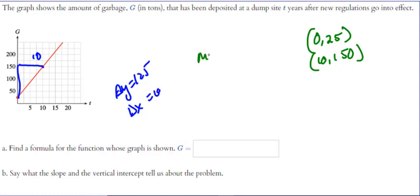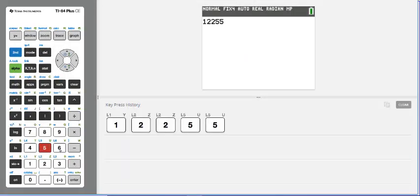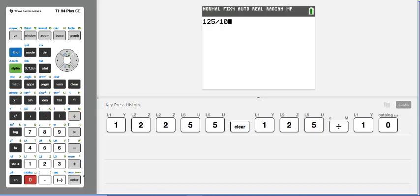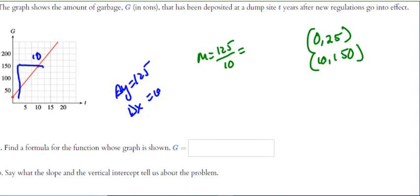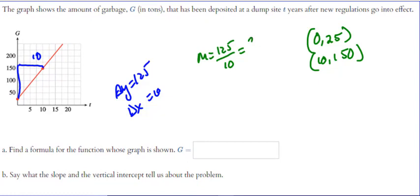So when we do this, the slope is 125 over 10. Let's grab my calculator. 125 divided by 10, hit the math button and hit enter, and it'll turn into a fraction, 25 over 2. Now the y-intercept happens to be 25, so we can write this as 25 over 2 times t plus 25.